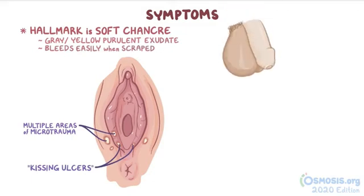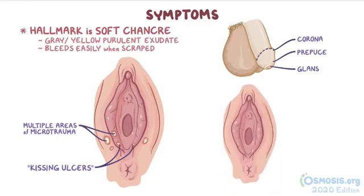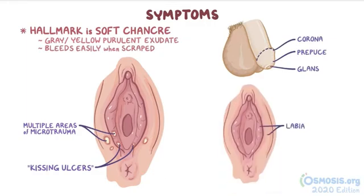Common sites of infection in men are the prepuce, corona, or the glans of the penis, and in women, the labia, vaginal introitus, and perianal areas.